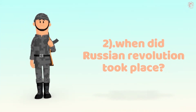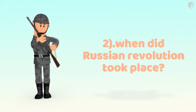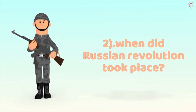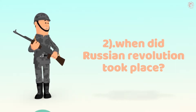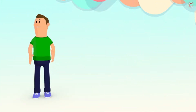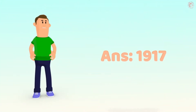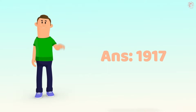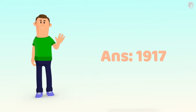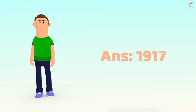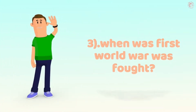Question number 2: when did the Russian Revolution take place? And here is your answer — 1917. So you get a question, you get a few seconds to answer it, and then we tell you the correct answer.